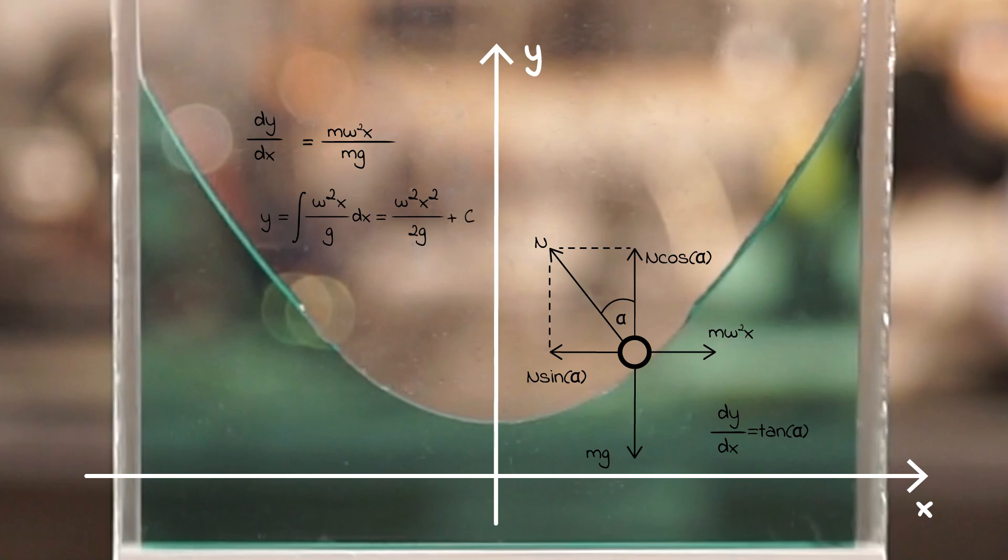This of course is a parabola. C is some constant that does not depend on x, but could be dependent on any of the other variables in this system. It simply determines the vertical positioning of the parabola.